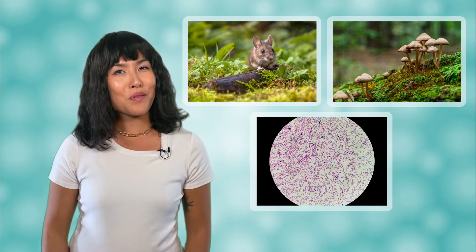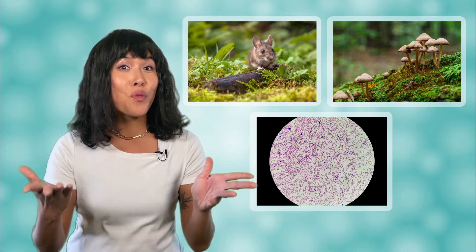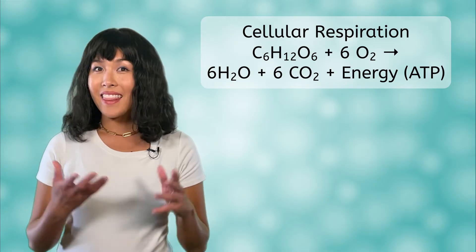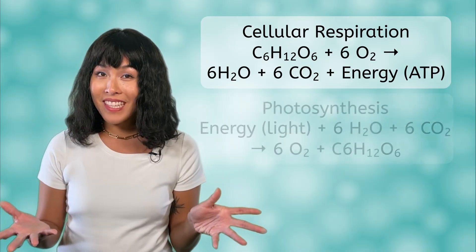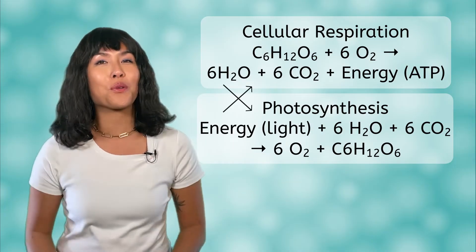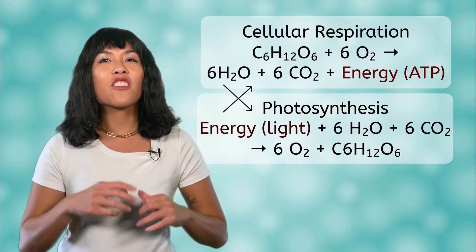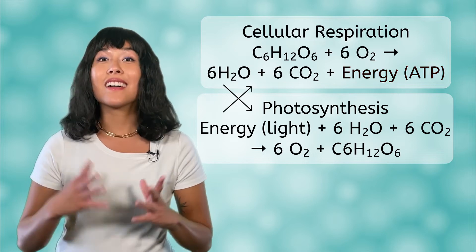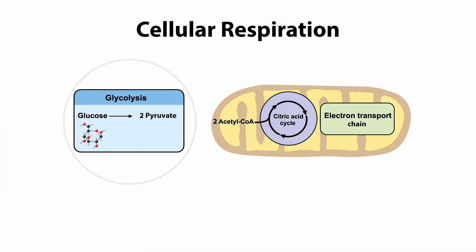All plants and animals, most fungi, and some bacteria perform cellular respiration to generate ATP. Let's take a closer look at the steps of cellular respiration in eukaryotes. This is the summary of cellular respiration. Do you notice anything familiar about this reaction? The reactants and products are the reverse of photosynthesis. A key difference, though, is that the energy that enters photosynthesis is in the form of light, whereas the energy that results from respiration is potential energy in ATP molecules. And, like photosynthesis, cellular respiration takes place over several steps. Let's start with the first step: glycolysis.